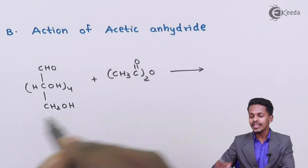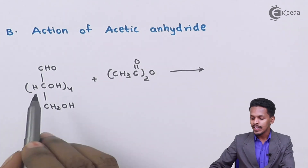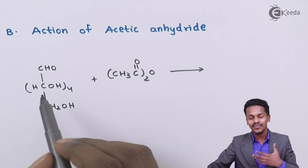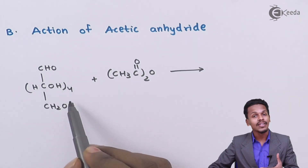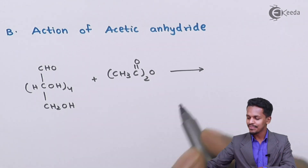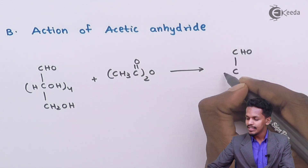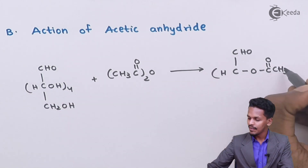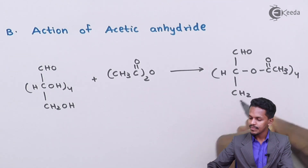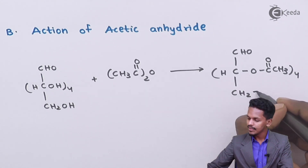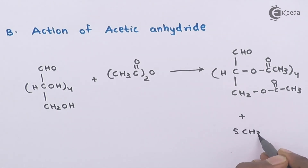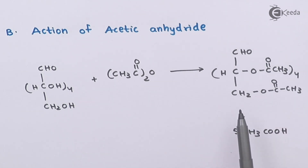Acetic anhydride replaces the OH groups in glucose. There are 5 hydroxyl groups in total — four in the middle and one in the CH2OH at the bottom. The product we get is CHO at the top, then CH–OOCCH3 four times, and CH2–OOCCH3 at the bottom, plus 5 moles of acetic acid (CH3COOH) removed as a byproduct. The name of this product is glucose pentacetate.